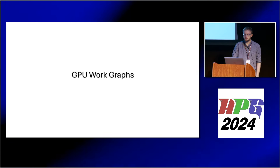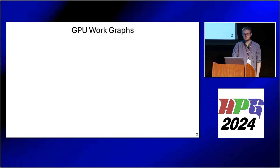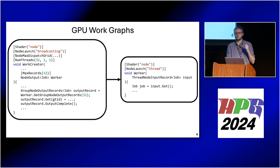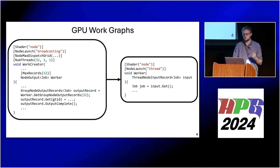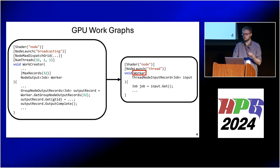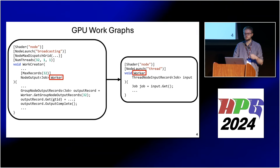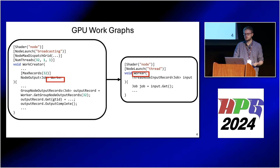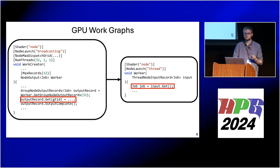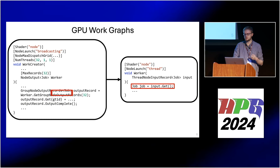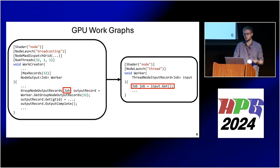For the beginning I have to give an introduction to GPU WorkGraphs. The idea of this novel API feature is that you have a compute kernel and you can create work items for another compute kernel from it. For example, here we have a worker kernel and it gets work items from the work creator. A work item is associated with some kind of parameters, for example in this case the job struct.